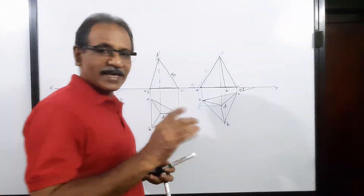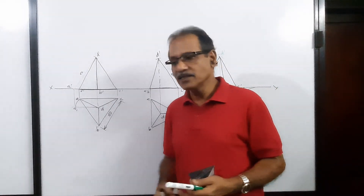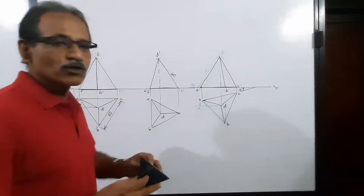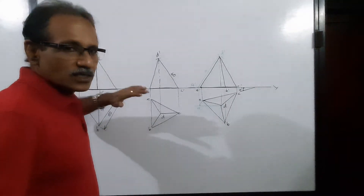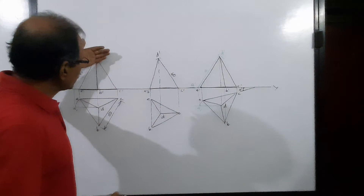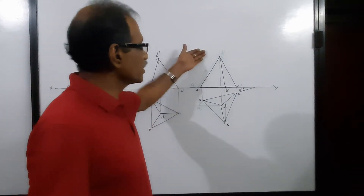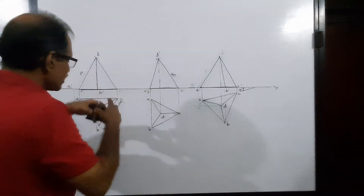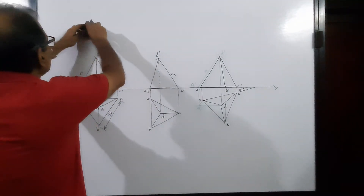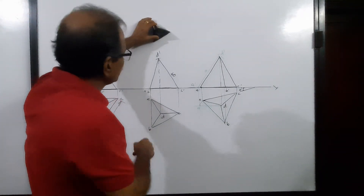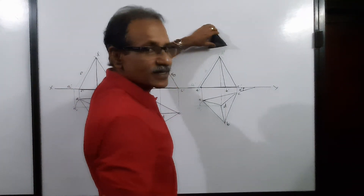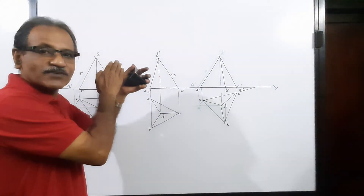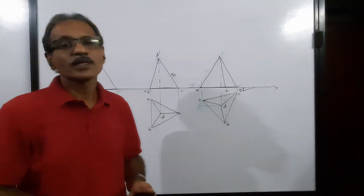These three are three significantly important positions of a tetrahedron resting on HP on a triangular face. The tetrahedron can also rest on VP. If it is on VP, the plan becomes below XY and the elevation above XY. The corresponding positions would be: one base side parallel to HP, one side perpendicular to HP, one side at some angle to HP. When the face is on VP, you draw the elevation first and then project the plan.